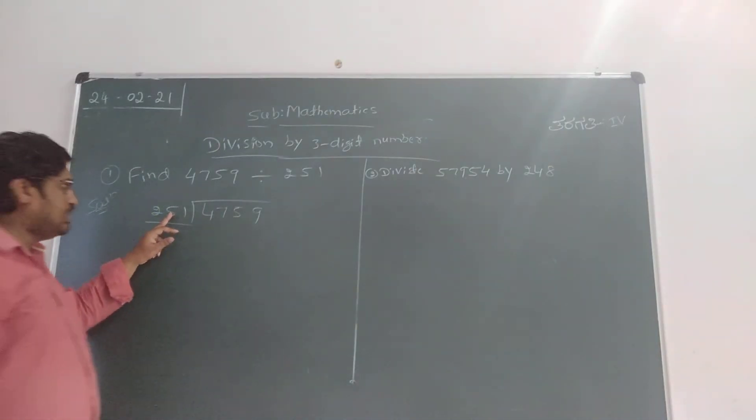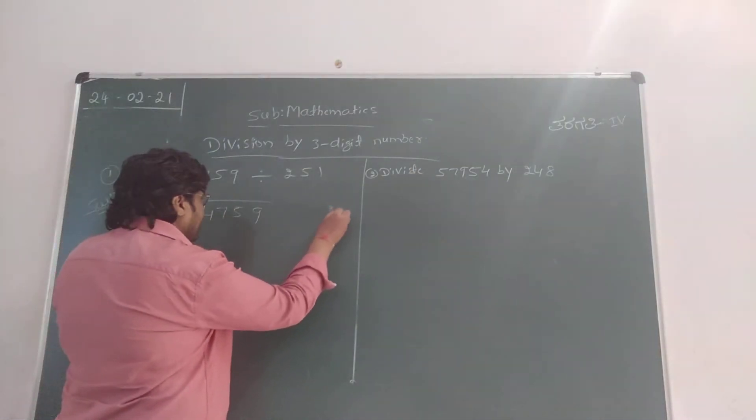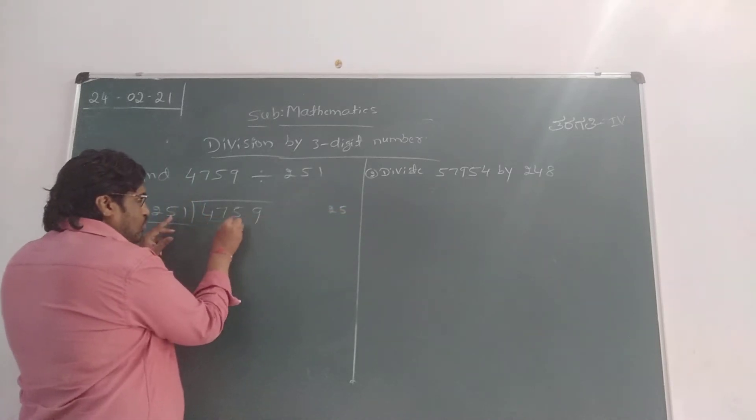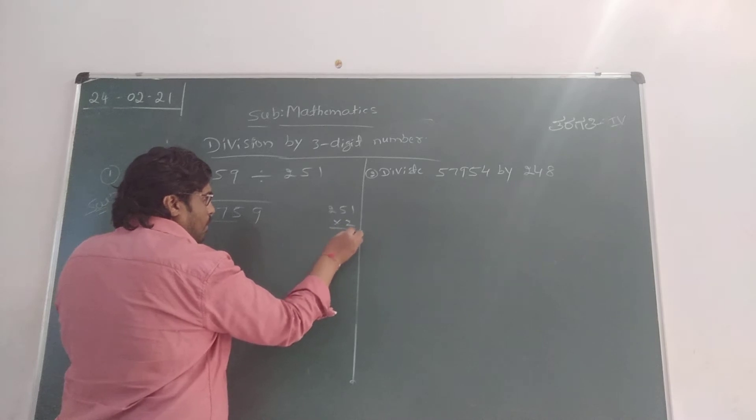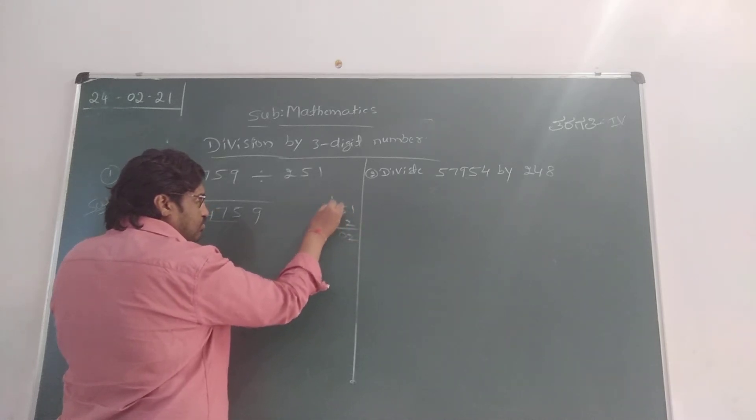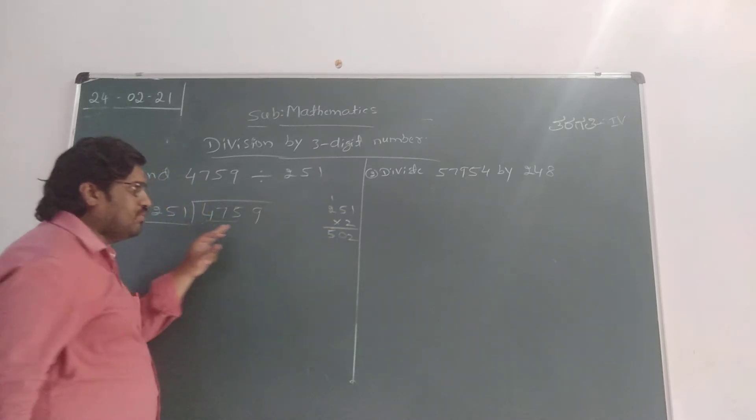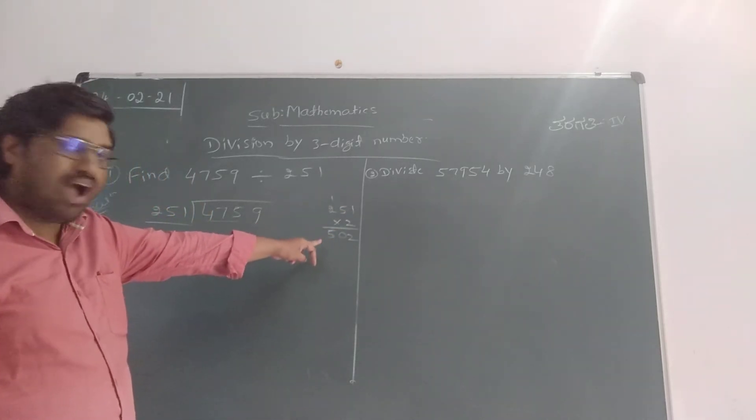See, 251 table. 251 times 2 is how much children, because the first 3-digit number is 475. So 251 times 2: 2 ones are 2, 2 fives are 10, zero here carry 1, 2 twos are 4, 4 plus 1 is 5. 251 times 2 is 502.